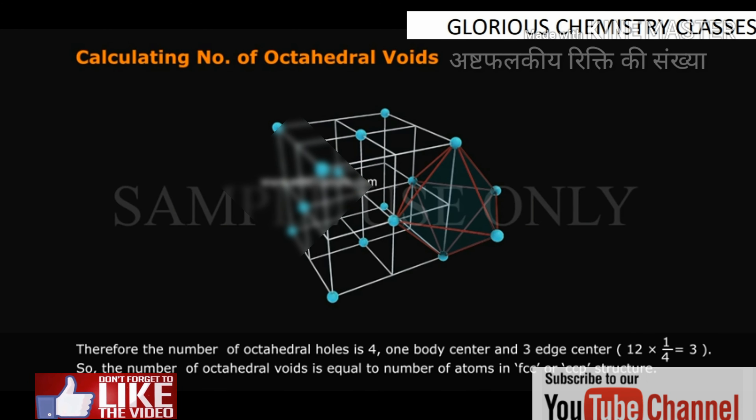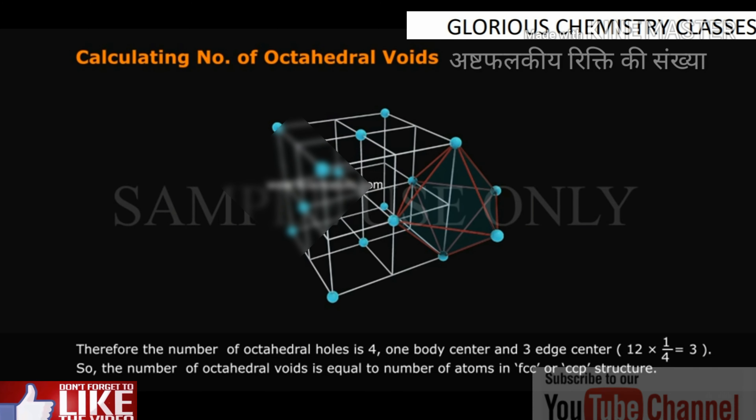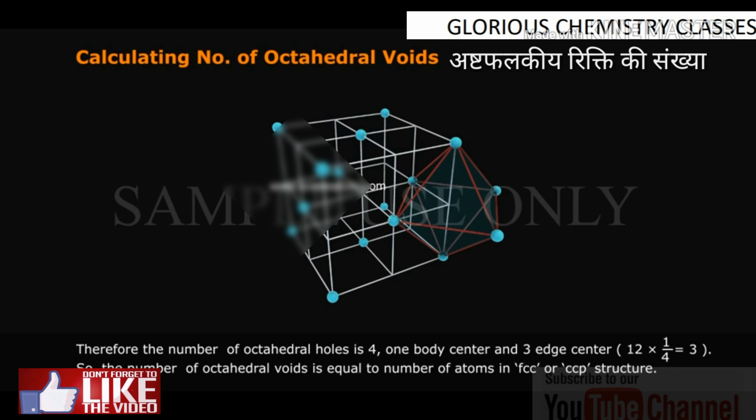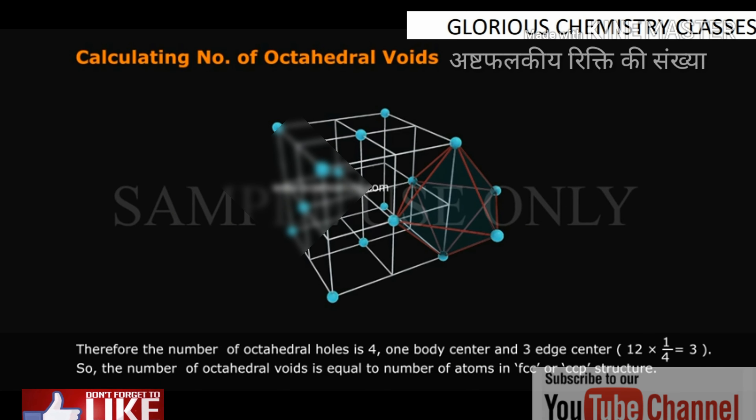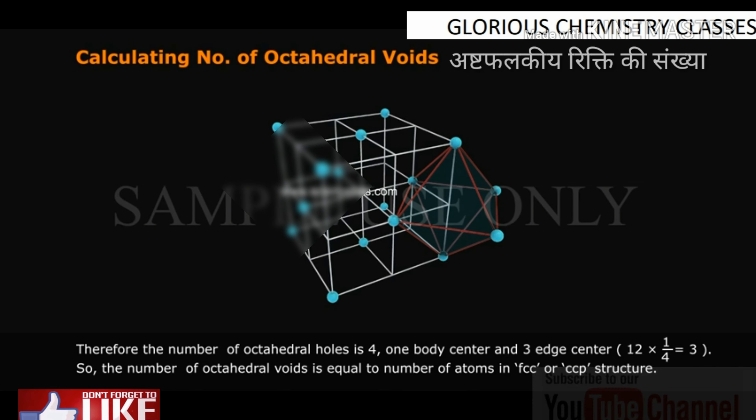But only 1 fourth of it belongs to 1 unit cell. Therefore, the number of octahedral holes is 4: 1 body center and 3 edge centers (12 × 1/4 = 3). So the number of octahedral voids is equal to number of atoms in FCC or CCP structure.